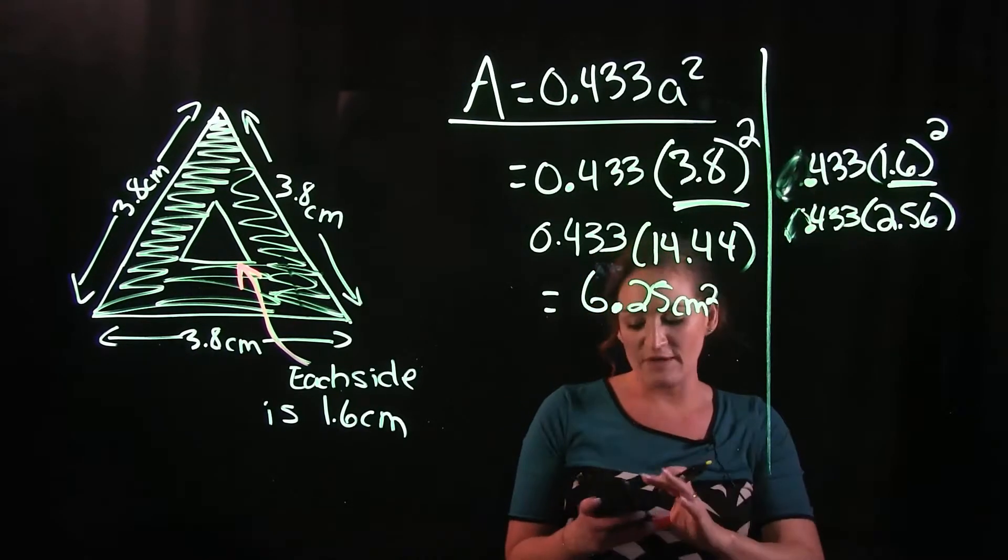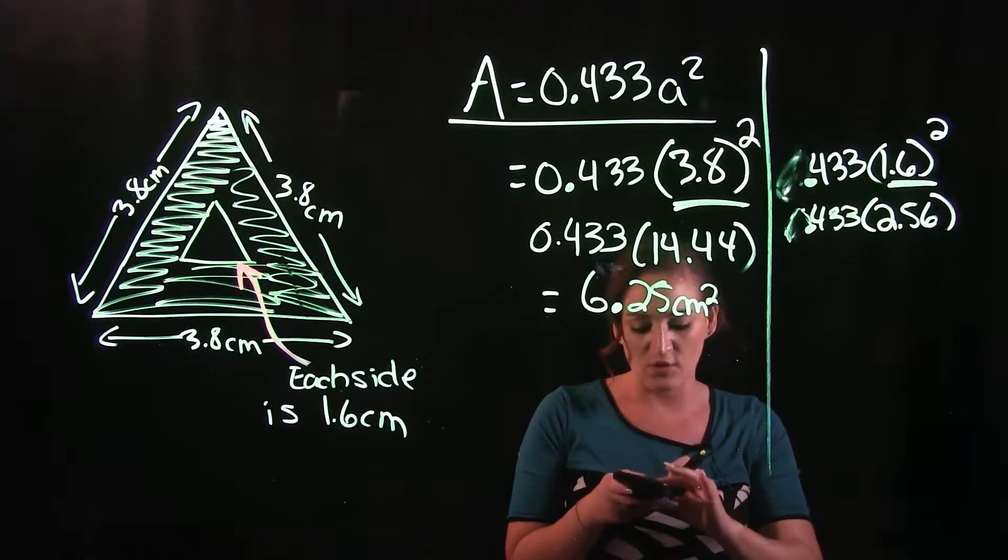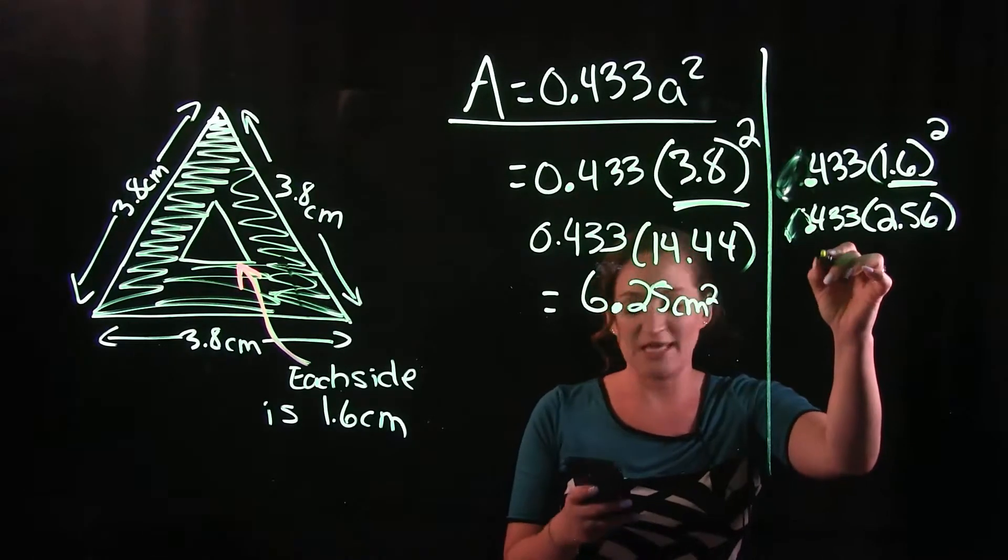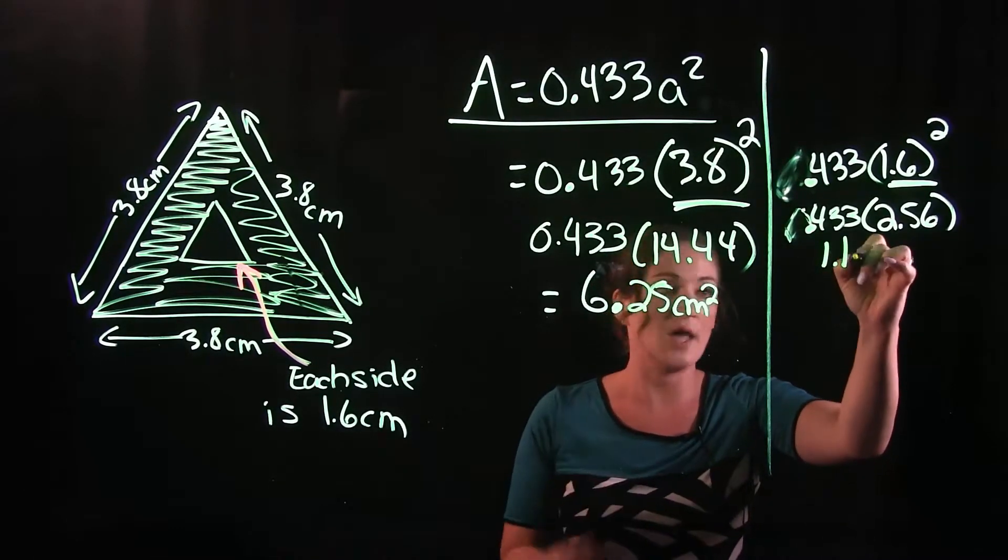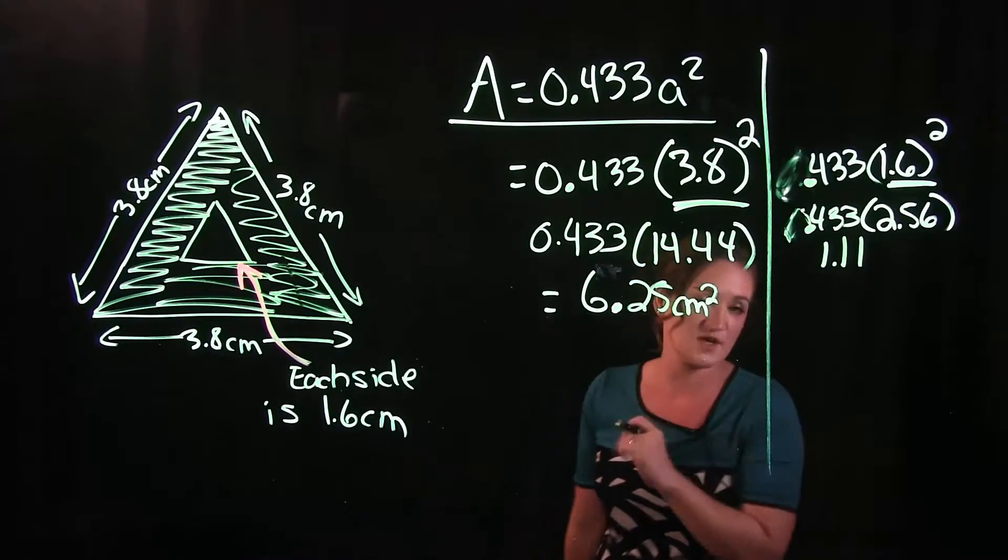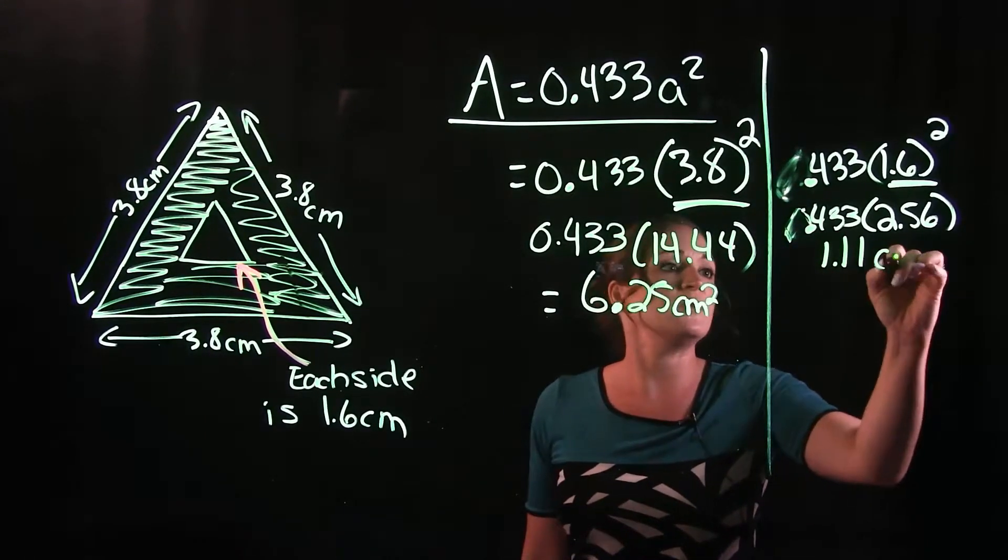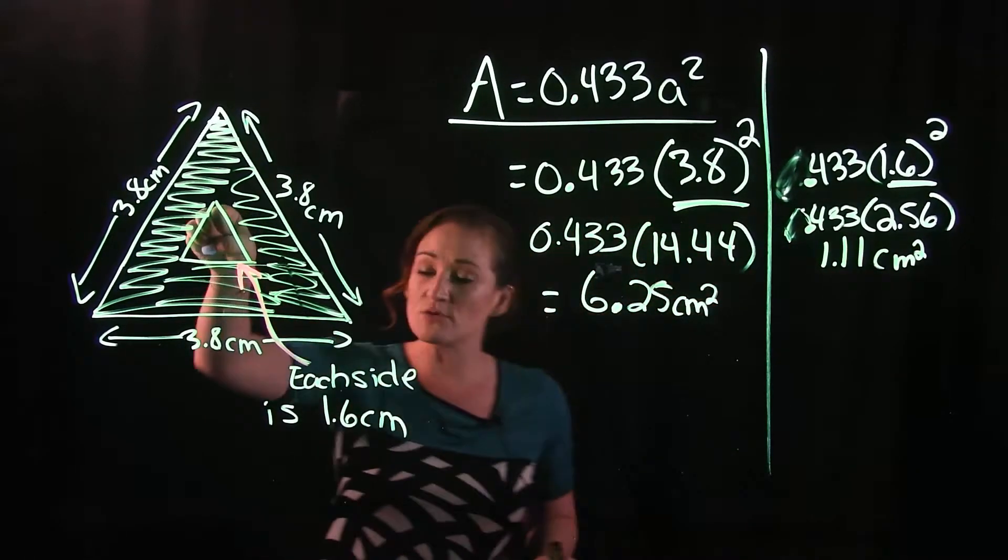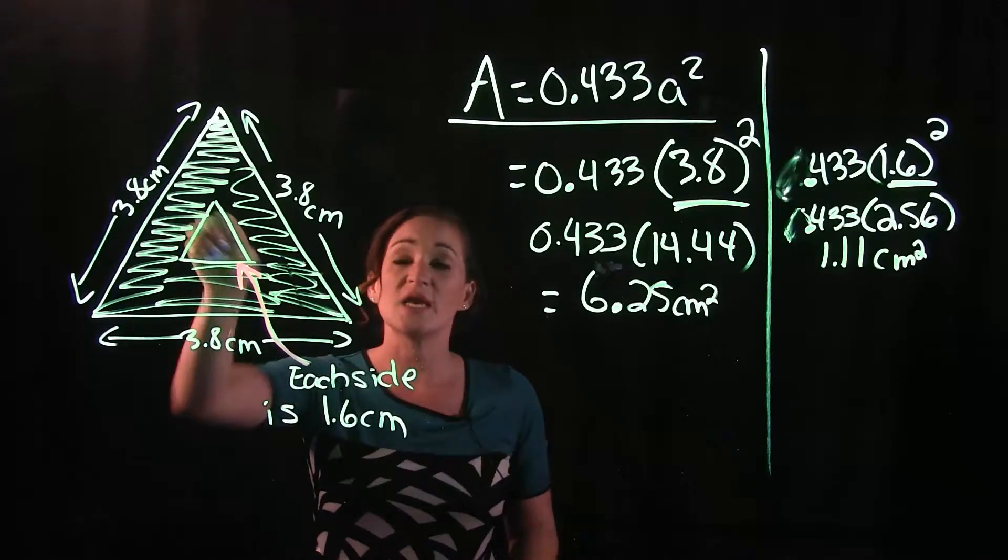2.56 times 0.433 is going to give us 1.11 if we round that to the hundredths. This is going to be the area of our middle triangle here, our small one.